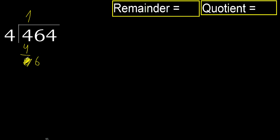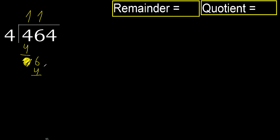bring down 0, then 6. 4 multiplied by 2 is 8 — 8 is greater. Multiply by 1 is 4, it is not greater. Subtract. Next,